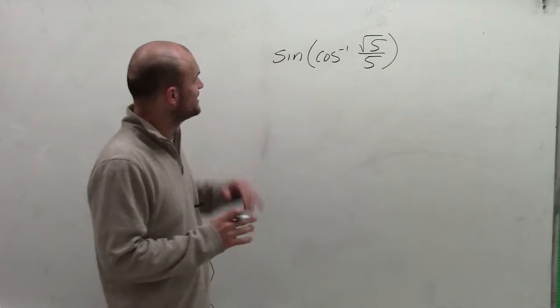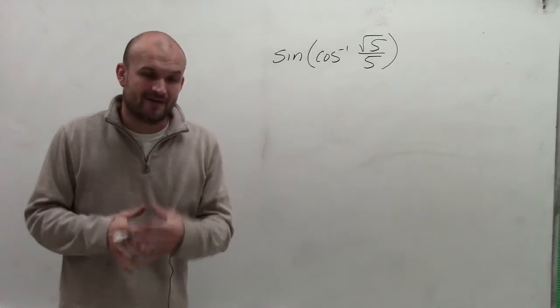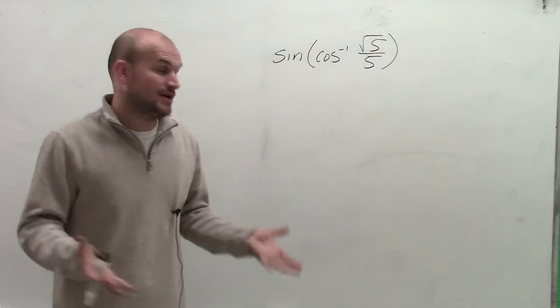Welcome. To evaluate this expression for sine of inverse cosine of square root of 5 over 5, we're going to have to create a right triangle.